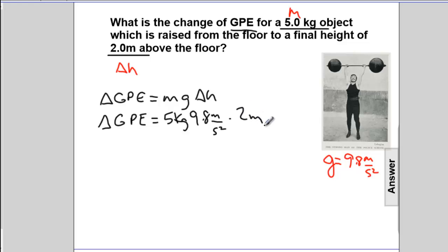We can approximate the answer. 5 times about 10 equals 50, times 2.